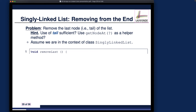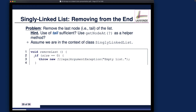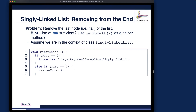Here is the removeLast method: it's a mutator returning nothing, named removeLast, with no input parameters. The error condition is important: if the current list is empty, it doesn't make sense to remove the last element, so if size equals zero that's an error. Otherwise, if size is larger than zero, we continue.